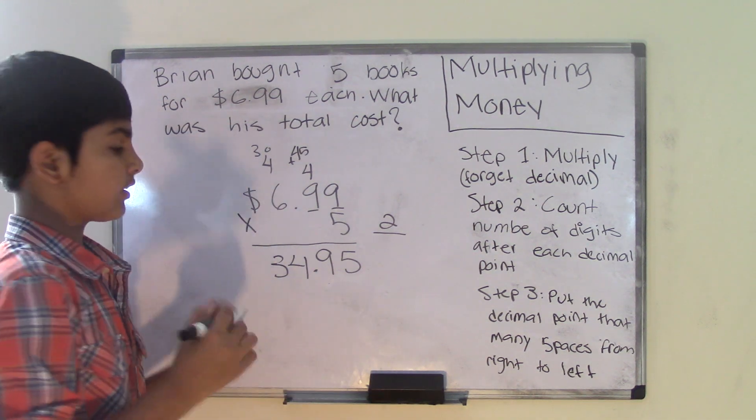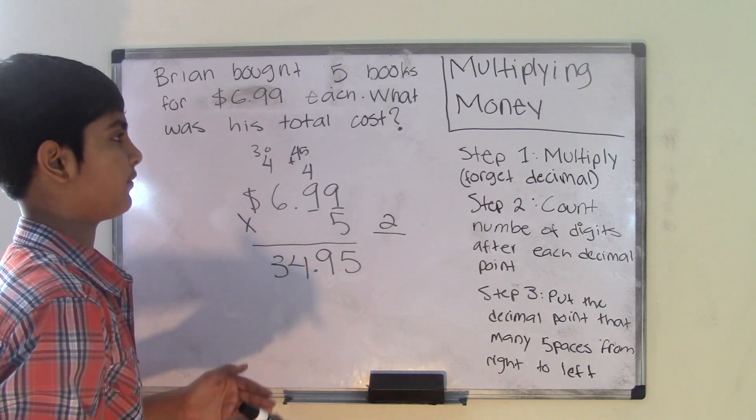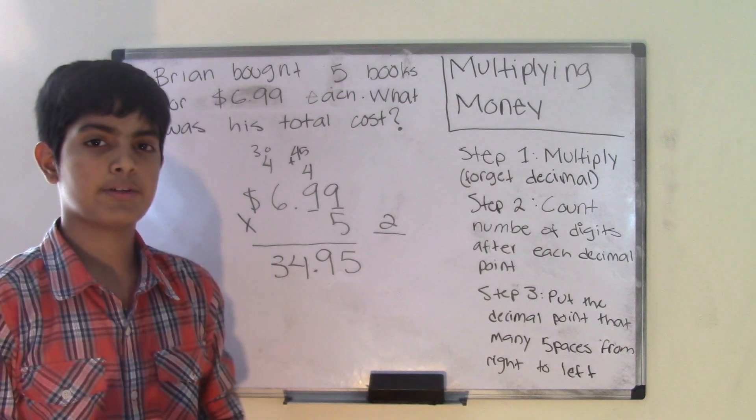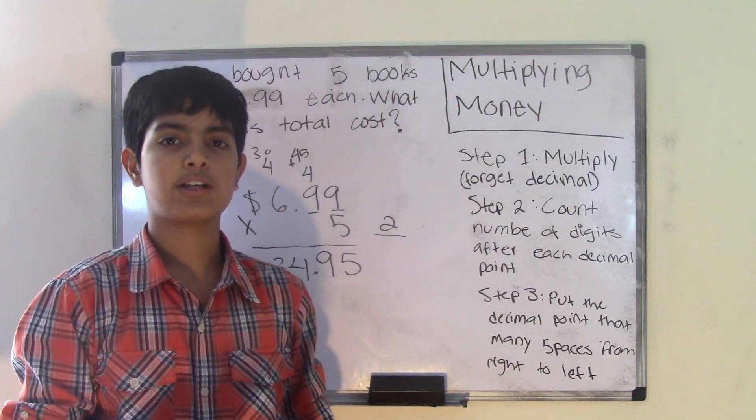So it changed from 3495 to 34.95. Alright, so this is how you multiply money. Check out our blog at BronsonMacClub.com and we will see you guys next time. Bye.